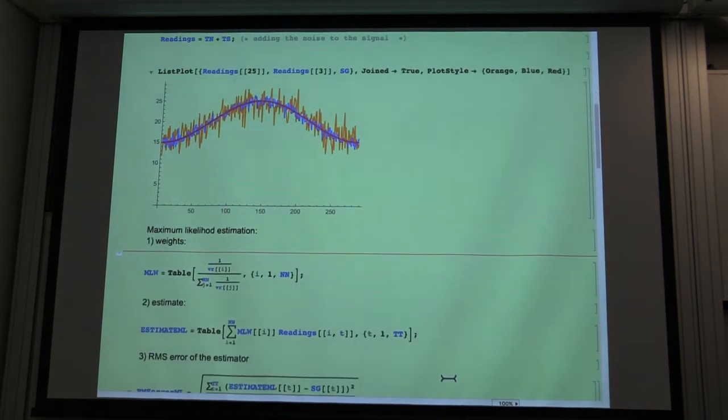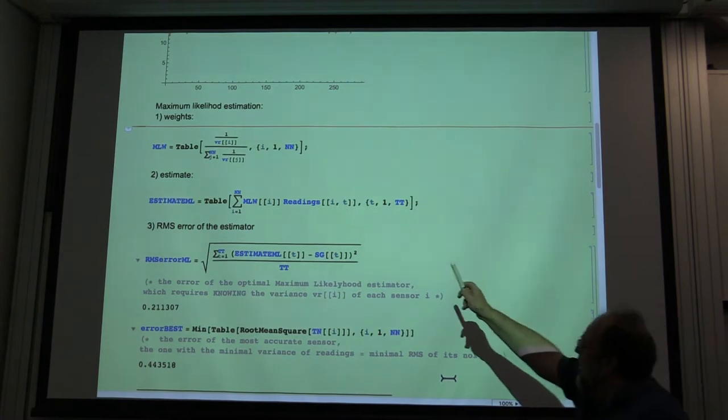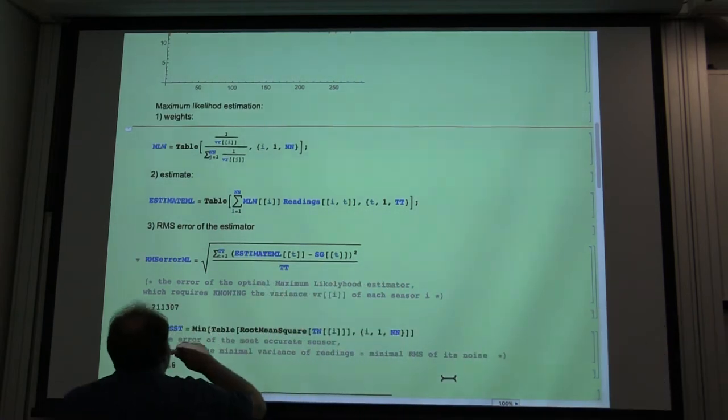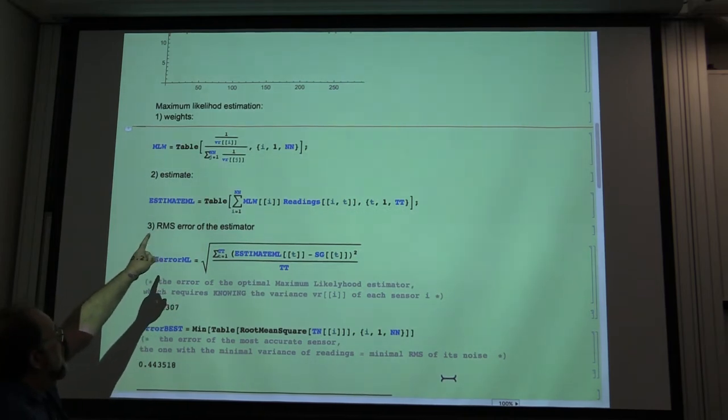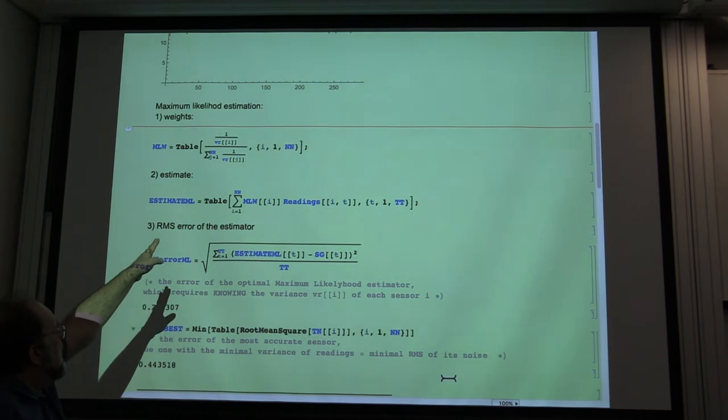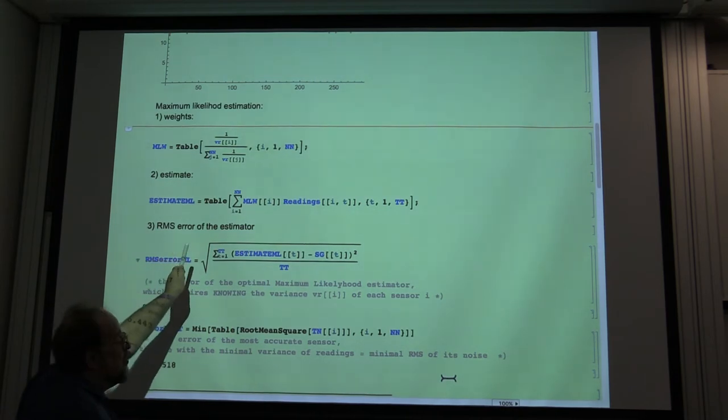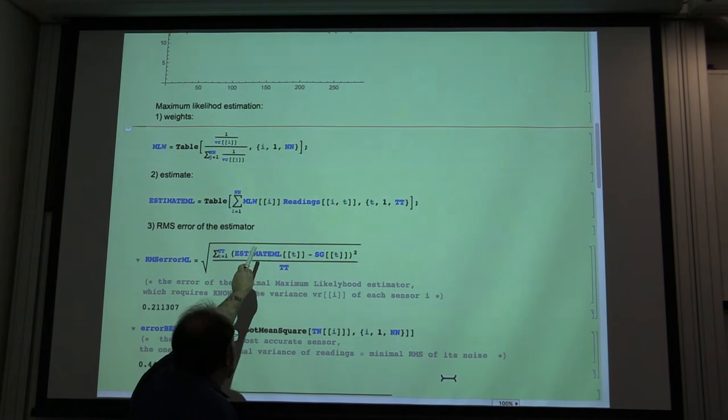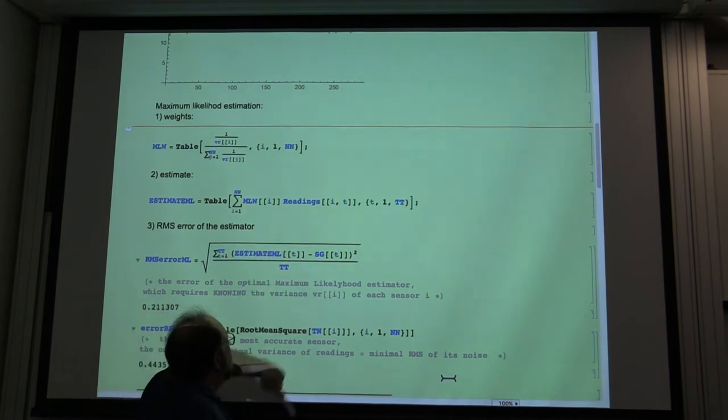Okay, so let us now see. Because we know how the noise is generated, we know the variances of each sensor, we can produce the weights for the maximum likelihood estimation as reciprocals of the variances normalized to sum up to one. This is a maximum likelihood estimator, so the optimal one. And lo and behold, it's simply the weights given by reciprocals of the variances times the readings.